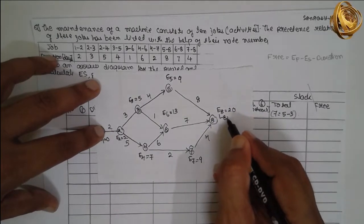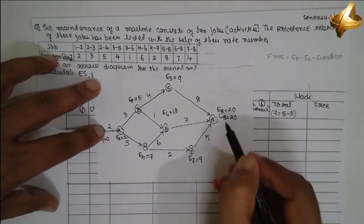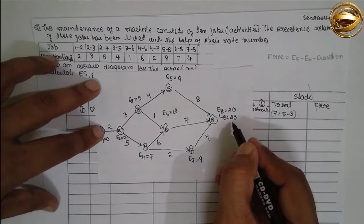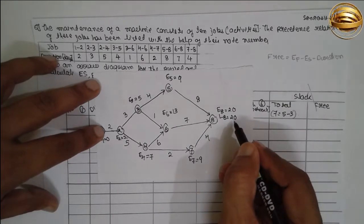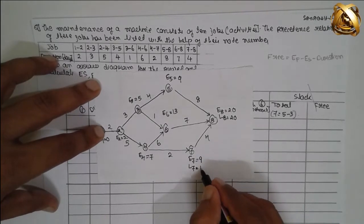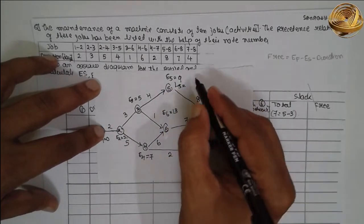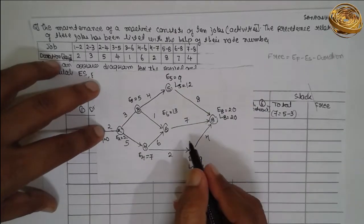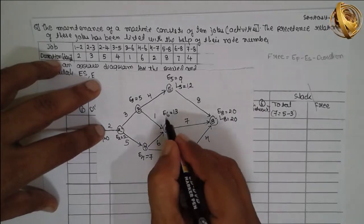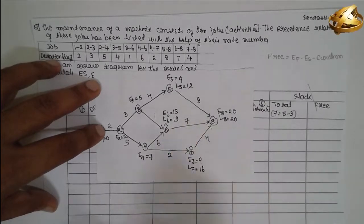Now write L8 equal to 20. Whatever value is obtained, we write in terms of L8. Now we are moving from right to left and must select the smallest value at junctions. Twenty minus 4: L7 equals 16. Twenty minus 8: L5 equals 12. Twenty minus 7: L6 equals 13.